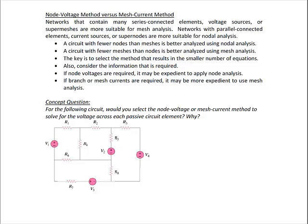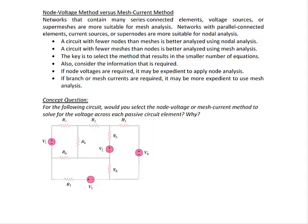Now that I've given you some reasons for choosing one method over the other, look at the concept question at the bottom of the page and determine whether the node voltage or mesh current method would be more efficient. Hopefully you selected the mesh current method. There are only four meshes, giving four equations. However, counting the nodes in this circuit, there are nine nodes.